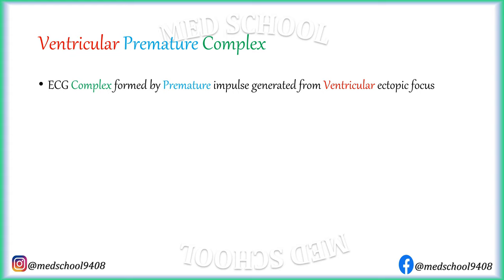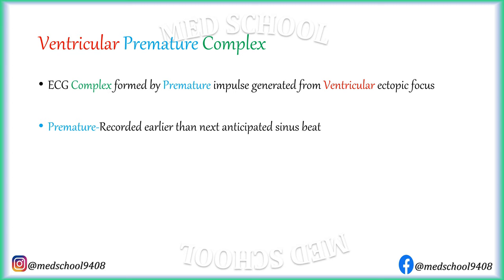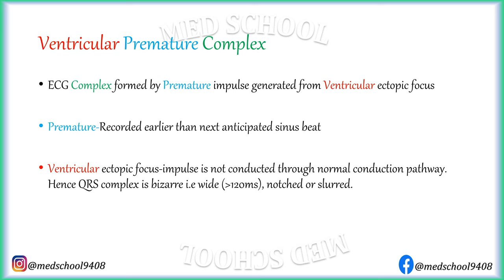Ventricular Premature Complex is an ECG complex formed by a premature impulse generated from a ventricular ectopic focus. It is premature as it is recorded earlier than the next anticipated sinus beat. It is generated from a ventricular ectopic focus, hence the impulse is not conducted through the normal conduction pathway. Hence, the QRS complex is bizarre, i.e. wide, notched or slurred.